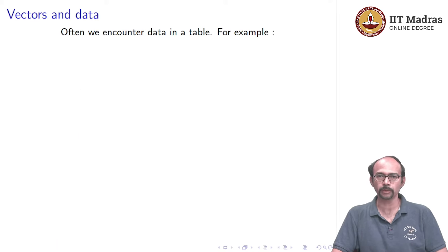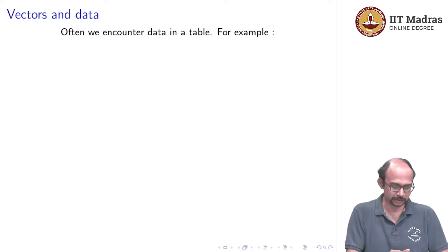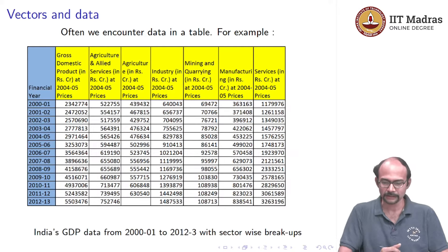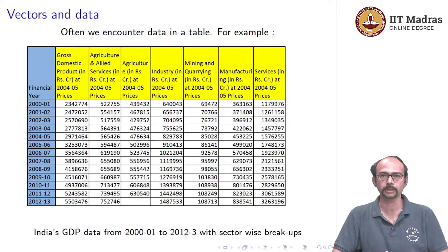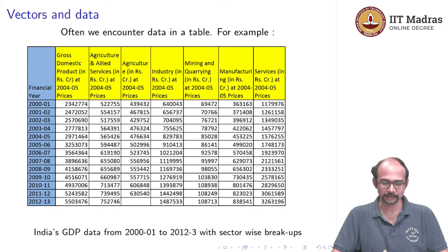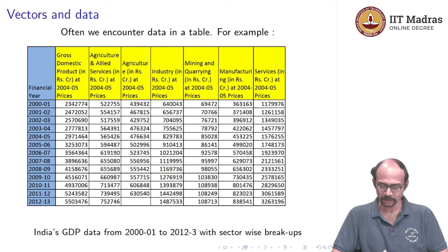Let us start with vectors and data. We often encounter data in a table — this entire course is supposed to be about data. Here is an example I took from the government website. It talks about the GDP, the gross domestic product of the country, and it breaks it sector-wise: what was the GDP from agriculture, industry, mining and so on, across the years 2000-2001 to 2012-2013.